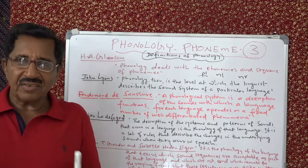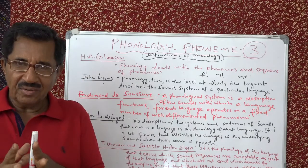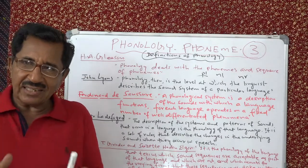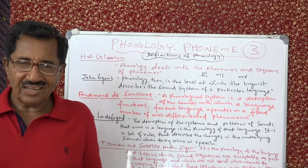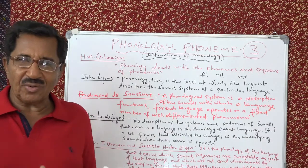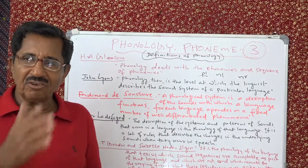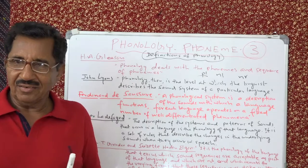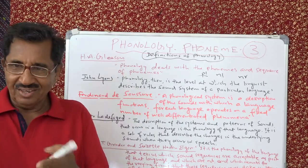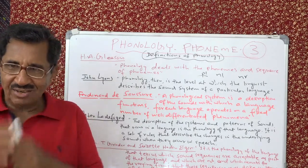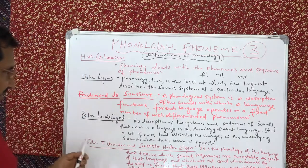Saussure made that path-breaking announcement: in language there is no content, no reality, but only difference. 'Cat' is cat because it is not 'dog'. 'Dog' is dog because it is not a peacock. When I say 'dog', you don't find a dog there — you find only a set of phonemes.